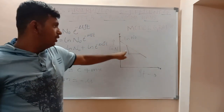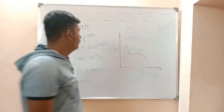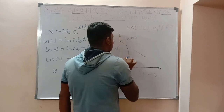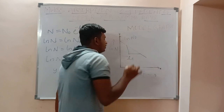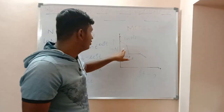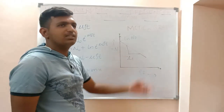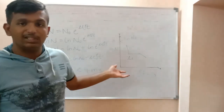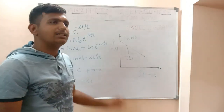As seen in the graph, the slope is negative since the line falls along the negative side. Taking the slope gives −μ, so μ is the magnitude of the slope. This μ is the mass absorption coefficient of the given copper.